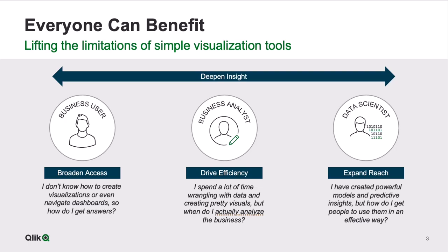The business analyst struggles with efficiency. They spend most of their time wrangling with data and creating visualizations, but have little time left to actually analyze the business, and they often miss the opportunity to make an impact. And then your data scientists — that's about reach. All the powerful models that they build and the analytics that they create: how do you get that into the hands of the business decision maker so they can use that insight to make better decisions? This is where AI comes in. If done right, AI can really lift the constraints of these second-generation tools and allow organizations to realize the true value of their data.